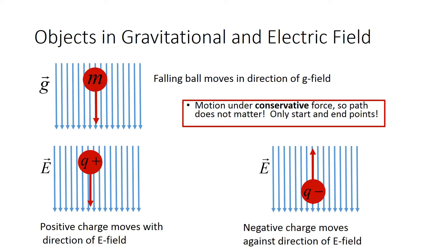The same can be said about an electric field. If we have a charge moving in an electric field, as long as the electric force is the only force acting on it, that's a conservative force, so path doesn't matter. The additional complexity here is that we have negative and positive charges: positive charges move in the direction of the field, negative charges move against it, and the energies change accordingly.